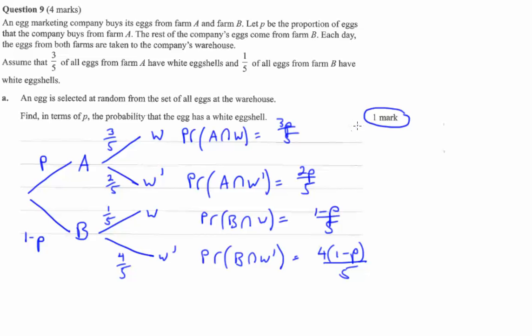Okay, that's not even the one mark yet because we want to know the probability of getting a white eggshell. Well, we don't care about the farm. So it's either coming from Farm A and it's a white eggshell, or it's coming from Farm B and it's a white eggshell.